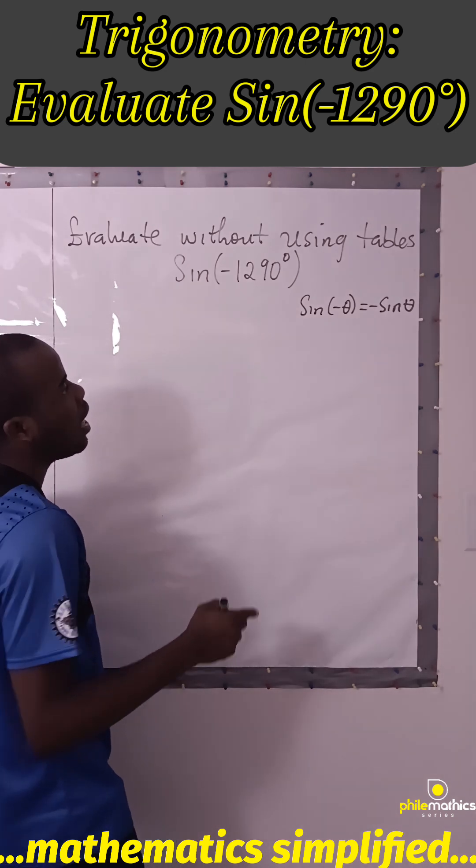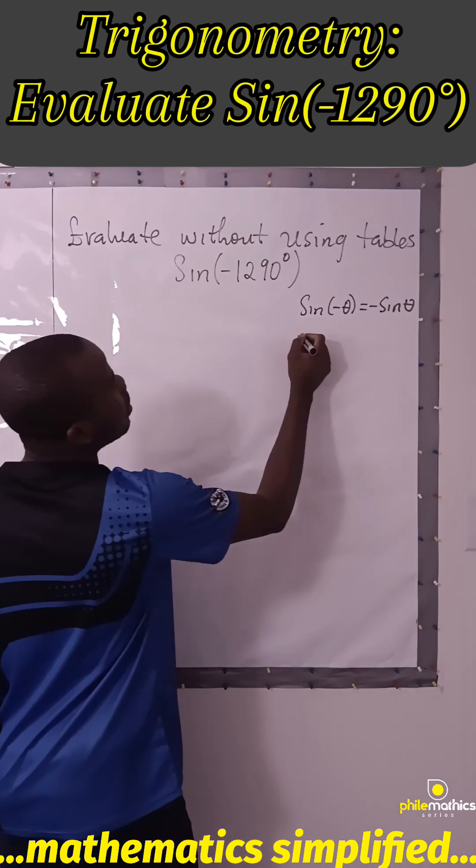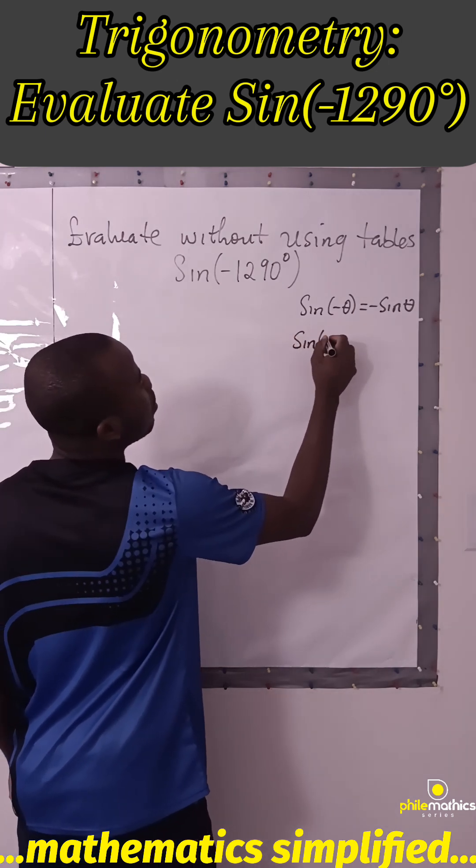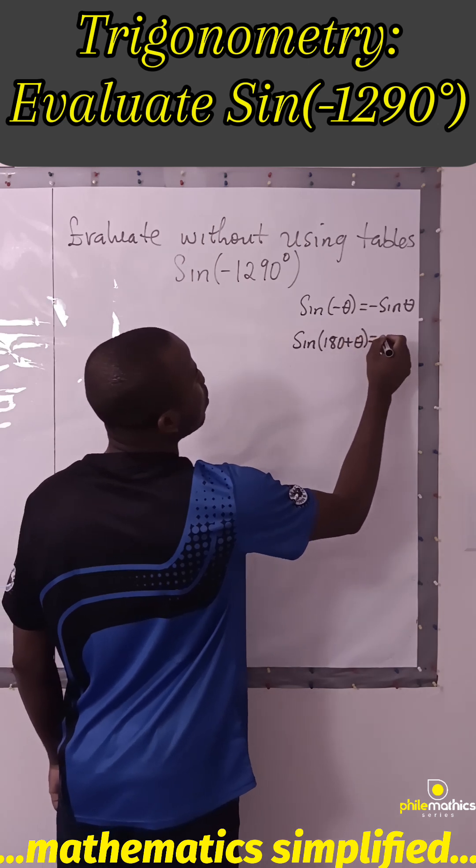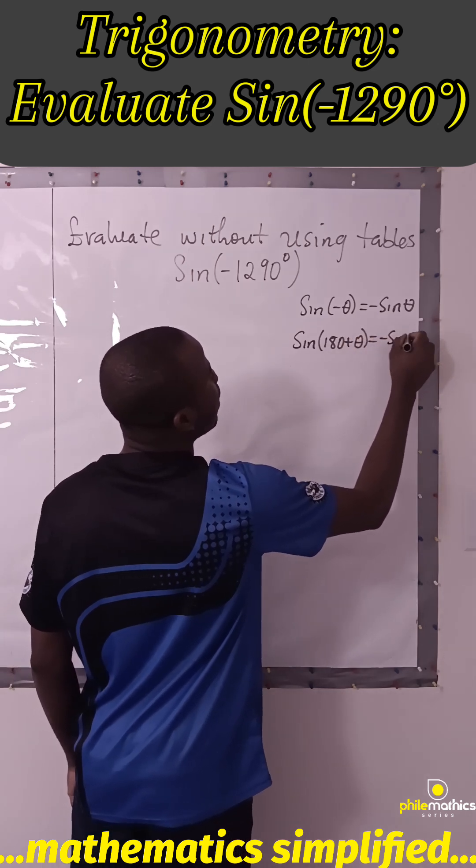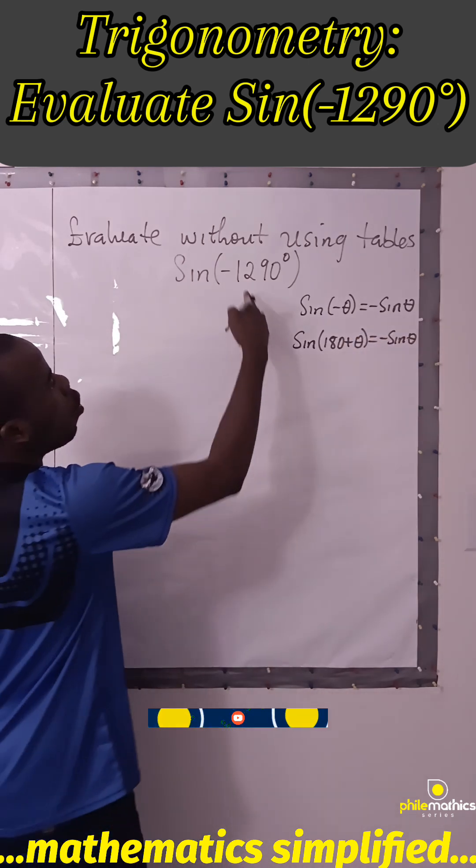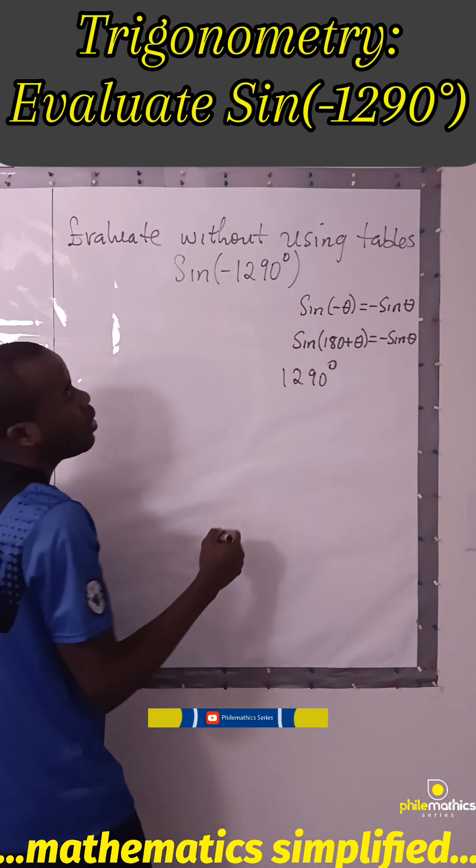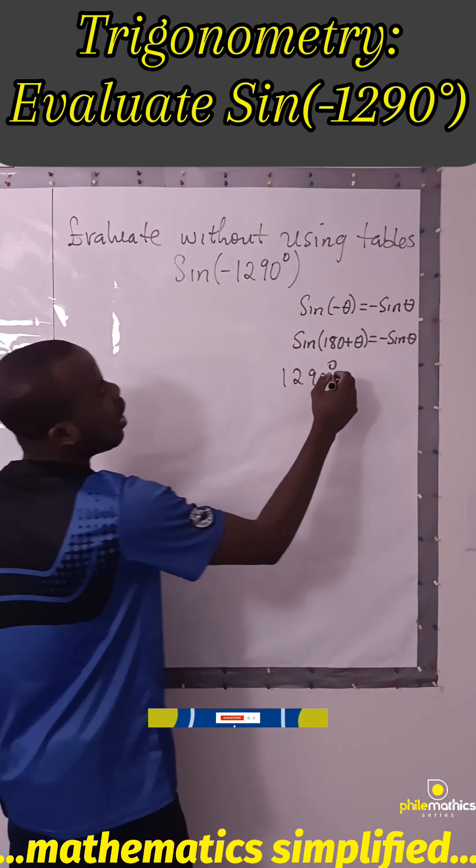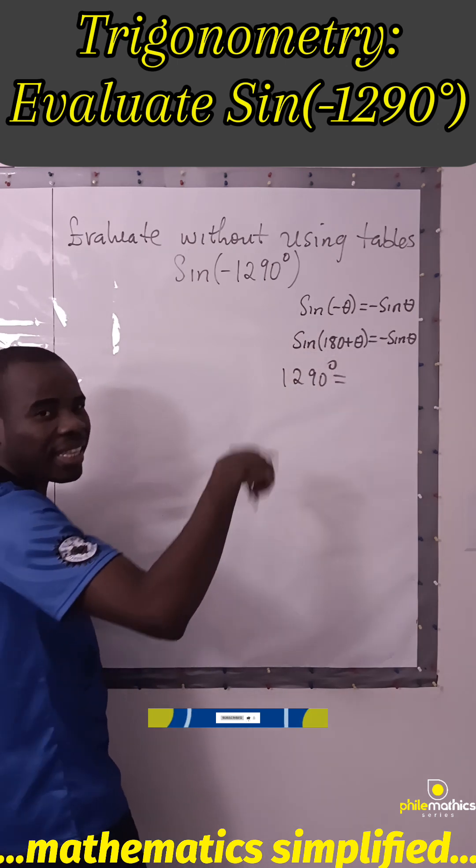And in the third quadrant, sin(180+θ) equals -sin(θ). And also, 1290 degrees can go through the quadrant three times, remember 210.